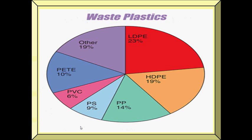This graph shows the breakdown of the type of waste plastics: 42% are polyethylene, 14% are polypropylene, and 9% are polystyrene.